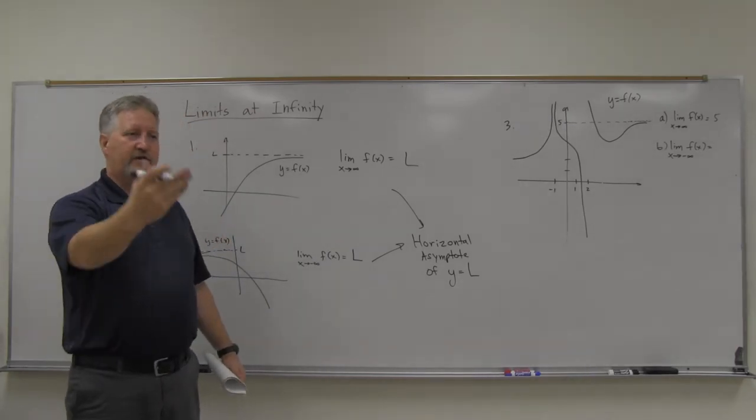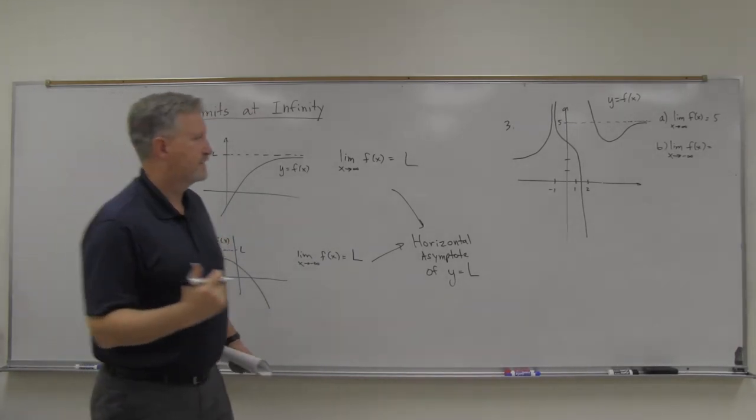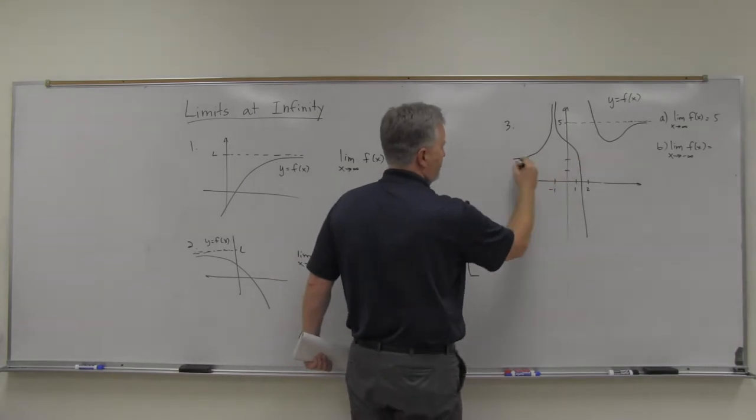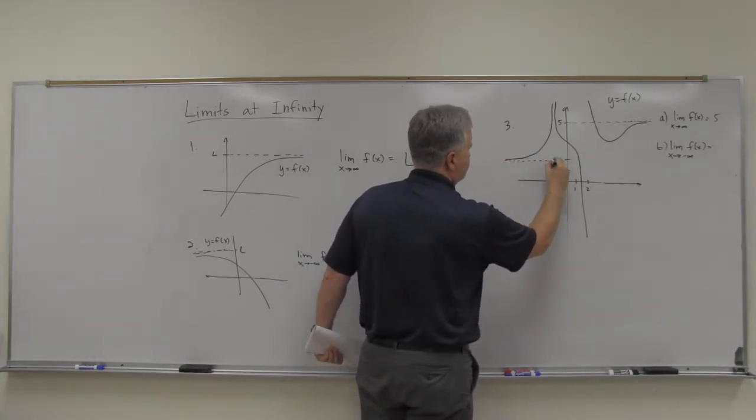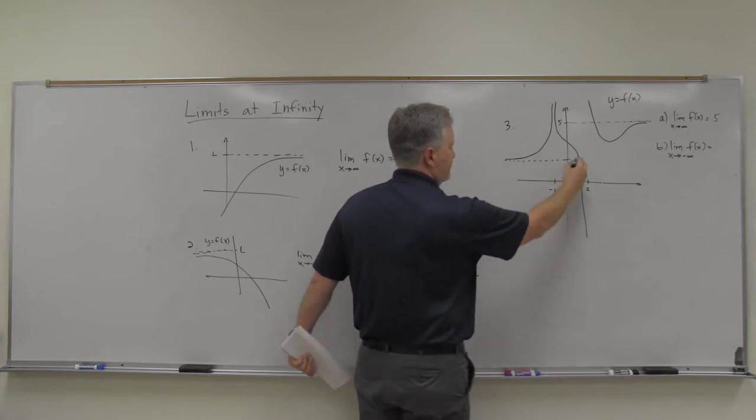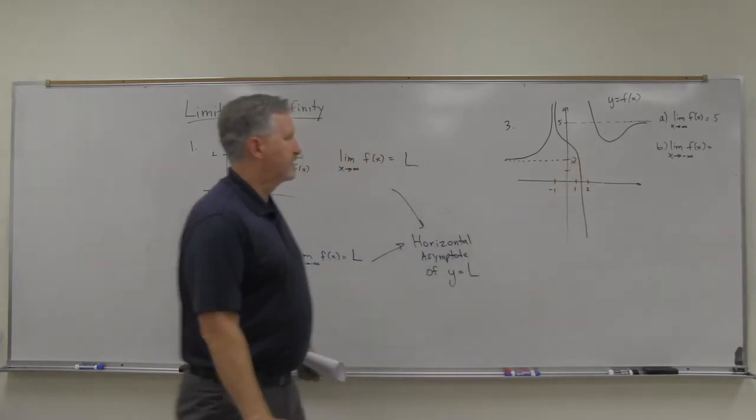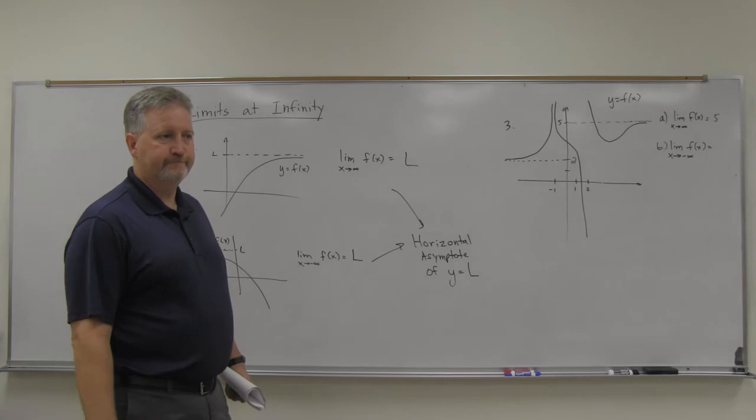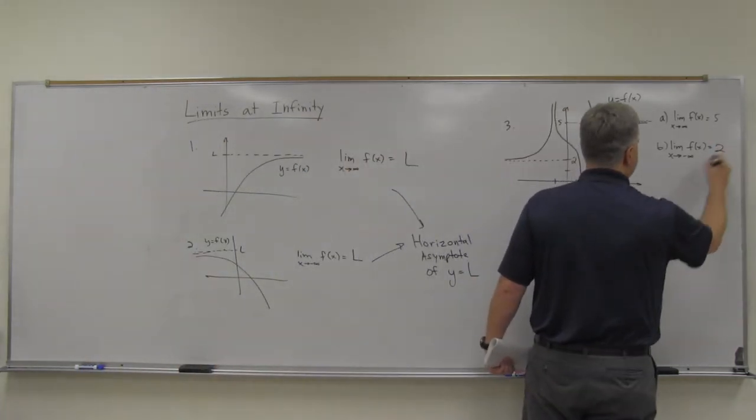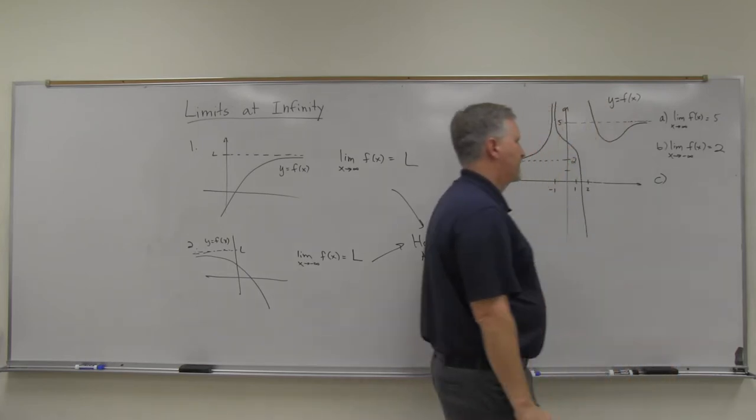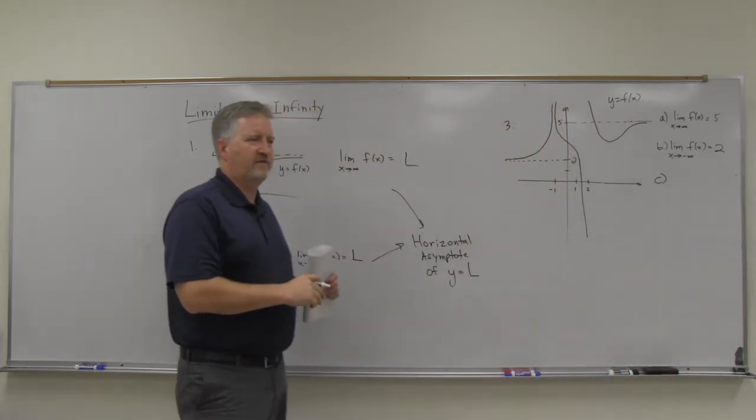So negative infinity, it's what happens on the far left. And so what happens on the far left here is this one looks like it's leveling off in this vicinity here, which I believe is two. I'm trying to gauge it there. About two. So the limit will be two.